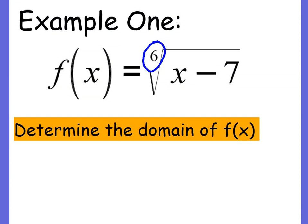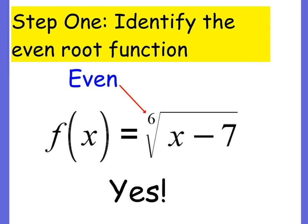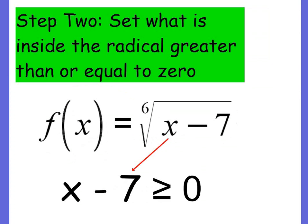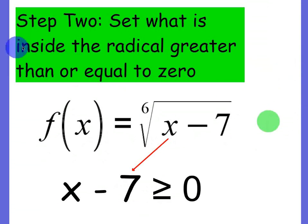Let's look at the first example: determine the domain of f of x. Notice it's an even root function because this is a 6th root. We want to make sure the radicand is positive, so we set it greater than or equal to 0. We take what's inside the radical — and that's key, just what's inside the radical. If it's not inside the radical, we don't have to worry about it.